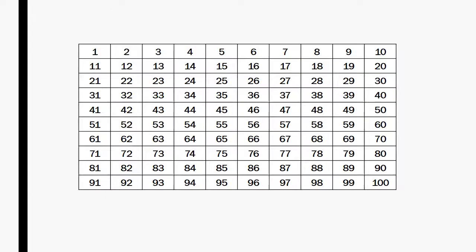This is the number 90. This is a hundreds chart. A hundreds chart shows all the numbers in order from 1 to 100. The arrow points to the number 90 on the hundreds chart. This is the number 90 on a hundreds chart.